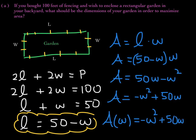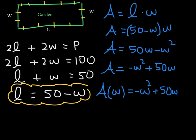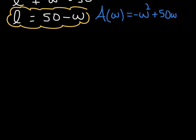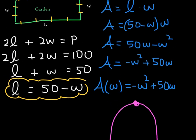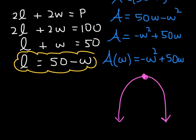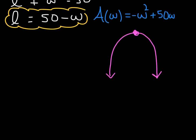This is an area function where w represents the width of our garden, and A of w gives the area of the entire garden. Notice that this function A of w is a quadratic function whose leading coefficient is negative, so if you graph it, it would be a parabola opening downward. When they ask us to maximize the area, since the parabola opens downward, there is a maximum, and the maximum occurs at the vertex.